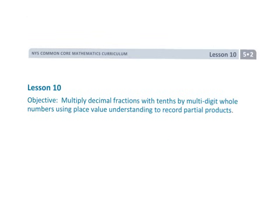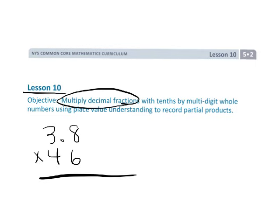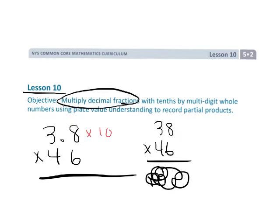And that's lesson 10, where we really started to use that standard algorithm to understand multiplying decimals. And the idea being, if you've got like 3.8 times 46, we're really going to begin by multiplying this by 10 to get 38 times 46. And then whenever we get whatever our answer is, we're going to divide it by 10 to return the answer to its proper place.